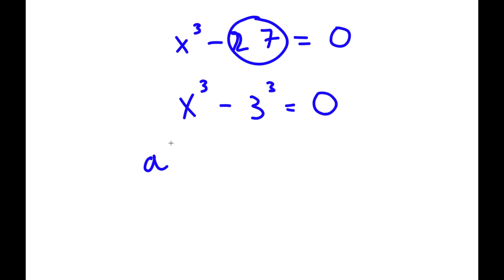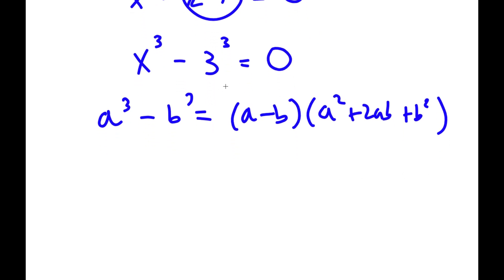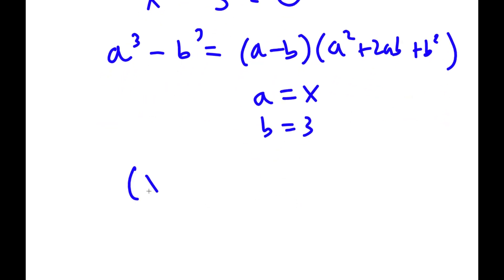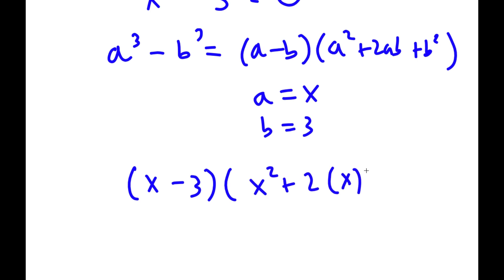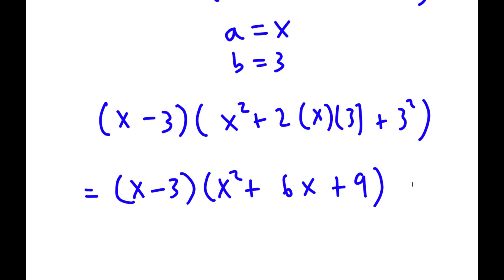If I have something in the form a to the power of 3 minus b to the power of 3, this is equal to a minus b times a squared plus 2ab plus b squared. In this case, a is equal to x and b is equal to 3. So now I have x minus 3 times x squared plus 2 times x times 3 plus 3 squared, which simplifies to x minus 3 times x squared plus 6x plus 9, and this is all equal to 0.